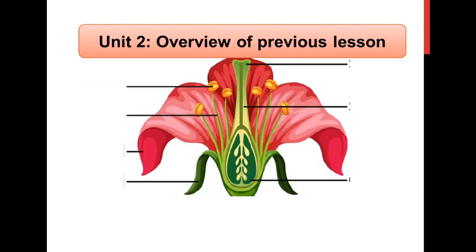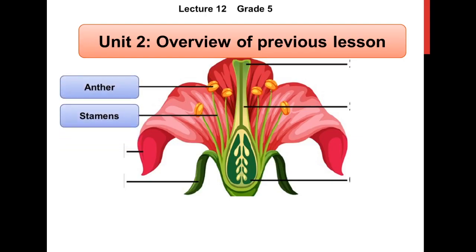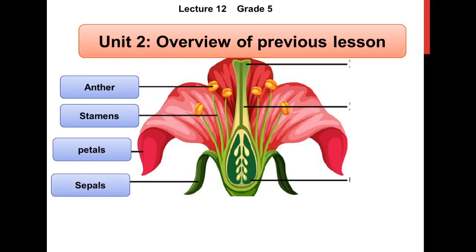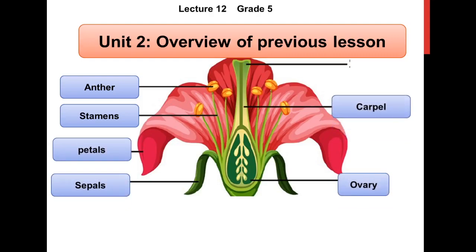In the previous lesson, we studied about the structure of a plant and in this section we studied its different parts like anther, stamen, petals, sepals, ovary, carpal and stigma.